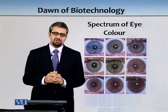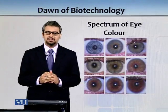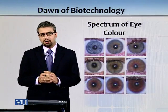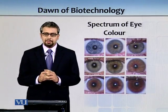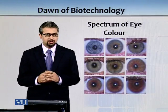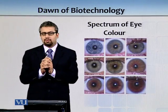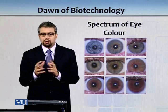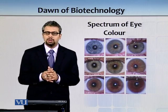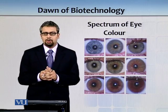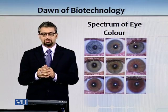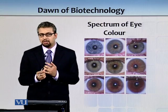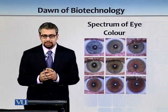Once the structure of DNA was discovered, the search for genes became red hot, and people started to ask questions about whether brown eye color is a dominant trait or blue, and whether there is one gene controlling eye color or multiple genes.